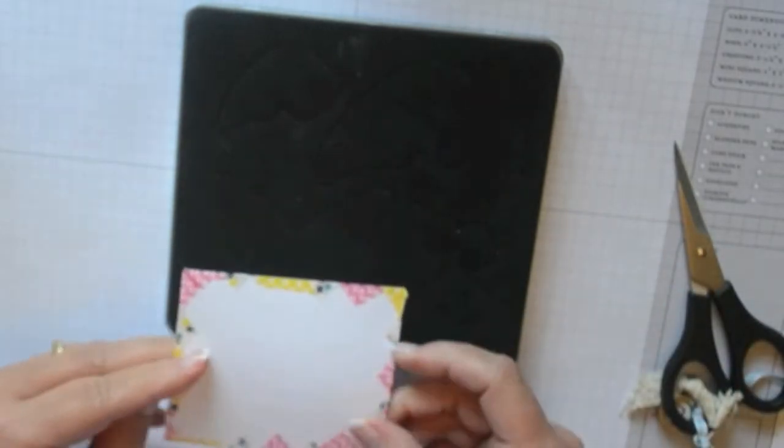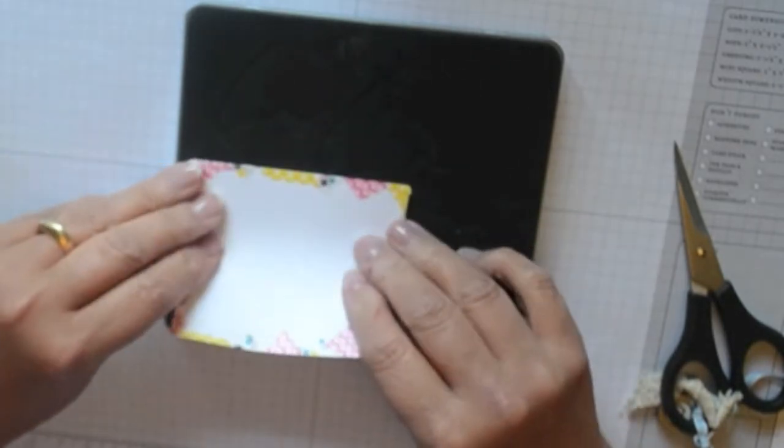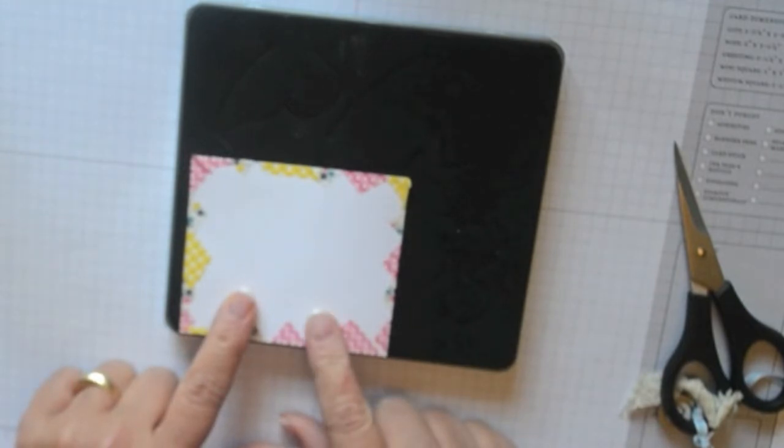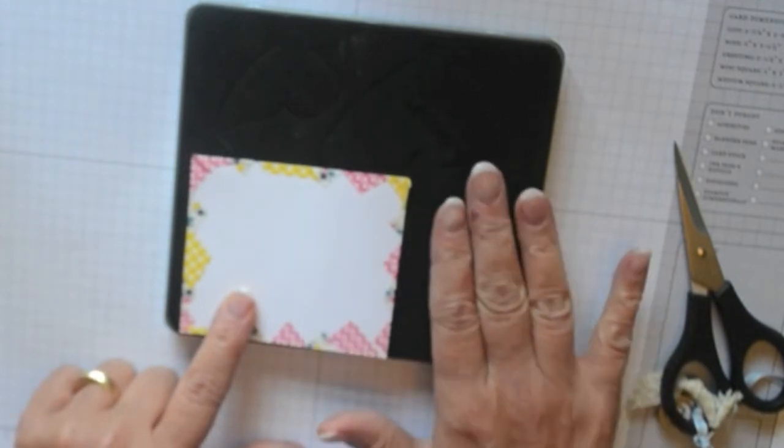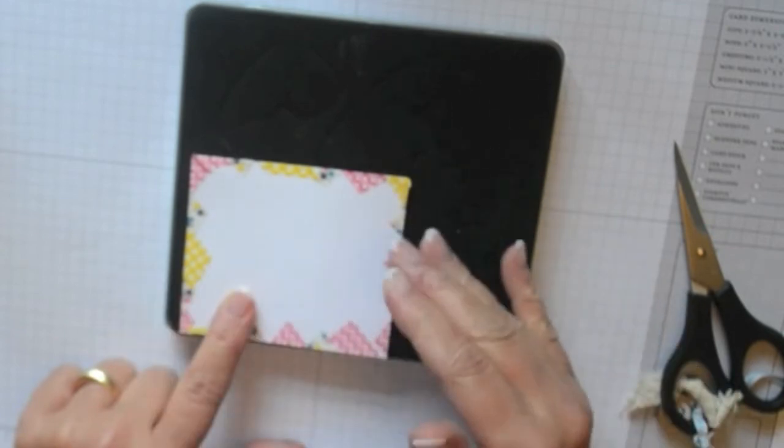What I do is I take the piece and I'm going to just line it up to the edges of my butterfly so I know I'm going to cover it completely. I'm going to put this through my big shot. I'm going to have a clear plate, I'm going to have the big die, I'm going to have my paper and then another clear plate and I'm going to just run that through the big shot.